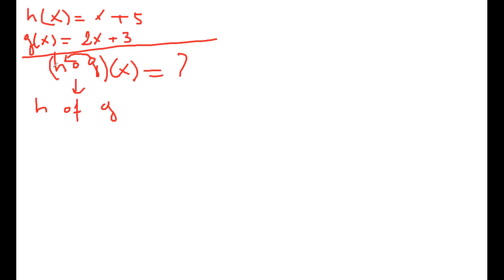Here's what you do: first you write the first function h — the expression is blank plus 5. I write it down but without the x, because h comes first. In h∘g, you write the first one as it appears without the x, and then you plug g into h. What goes into the parentheses here? Two x plus three — that's right.